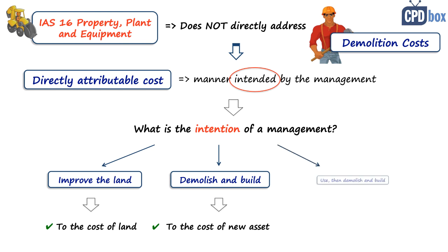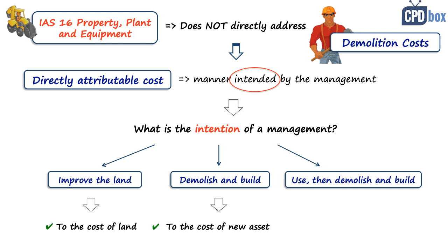Scenario three: the company acquired land with a building, used the old building for some short time, and then demolished it with the intention to build a new building. Here management's intention at acquisition was to use the existing structure, so the demolition relates to the disposal of the old building. You would not capitalize it to the cost of the new building; instead, you would expense it as incurred.